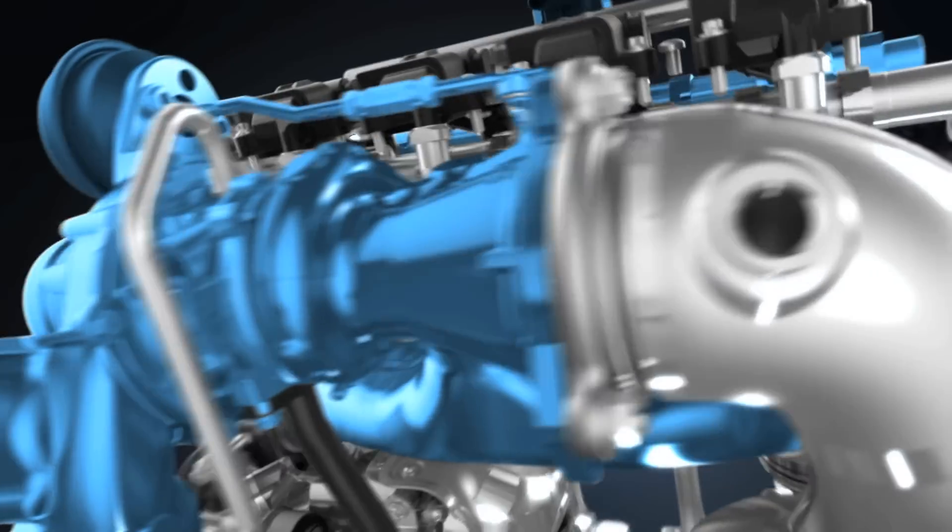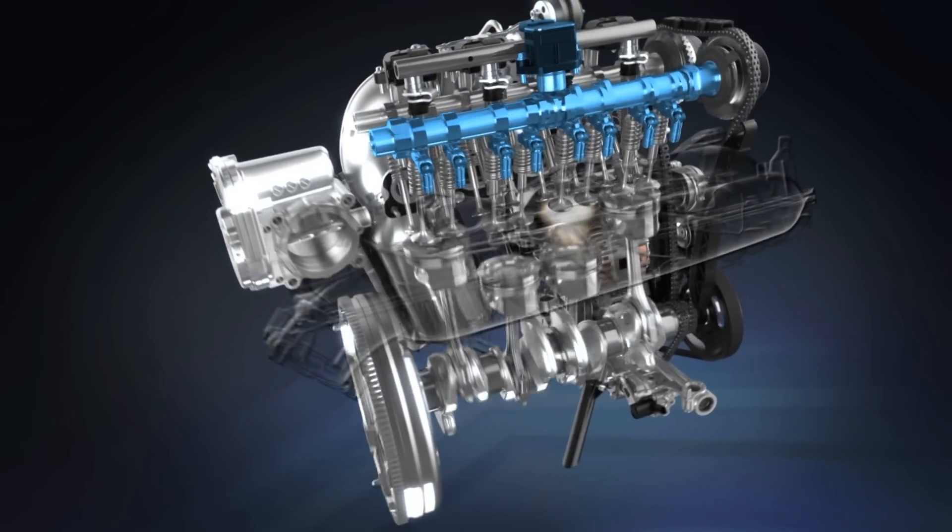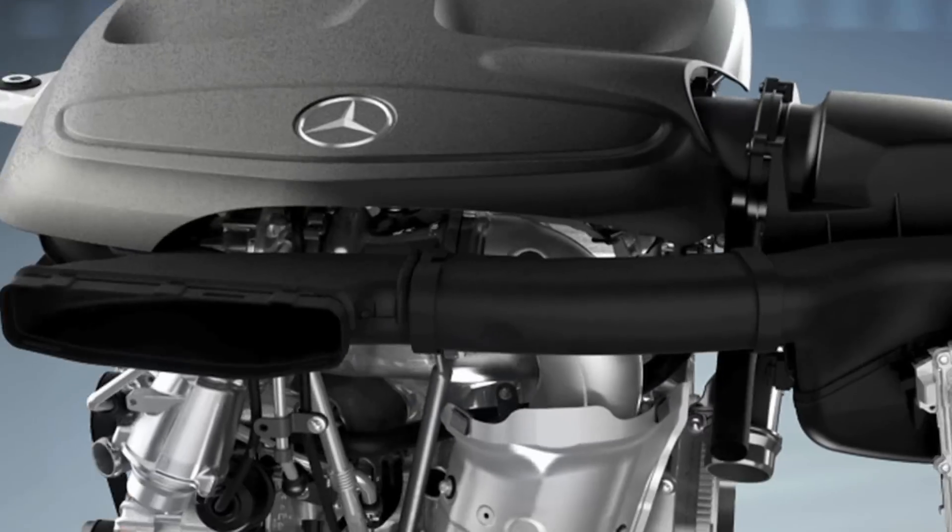With a further increase of the torque, the valve lift is switched to large lift and the load control conventionally takes place via the throttle valve or, in the supercharged operating range, via the degree of supercharging by the turbocharger.